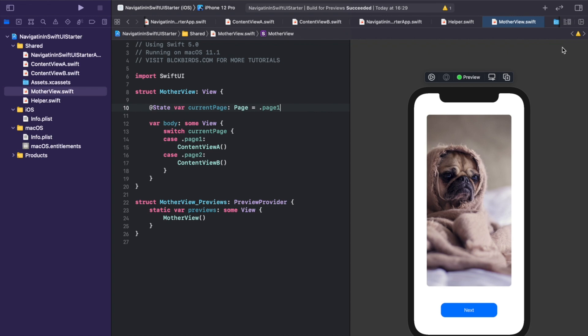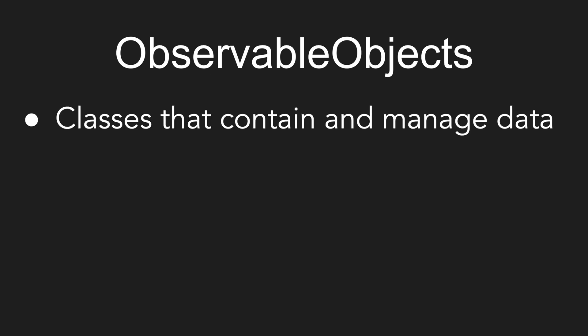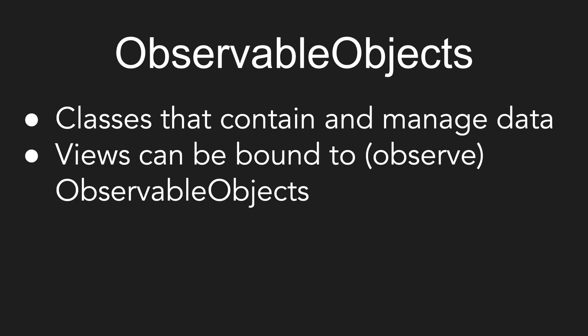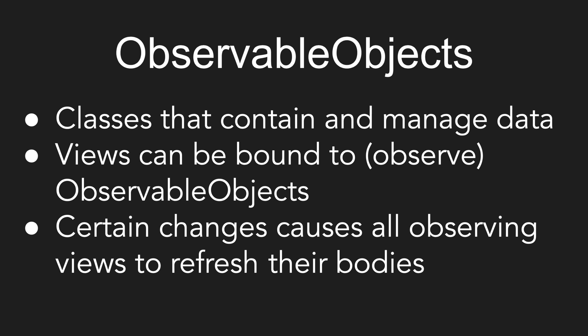At this point you are probably asking yourself: what are observable objects? Observable objects are similar to state properties. But instead of just refreshing the body of the related view when data changes, observable objects are capable of more. They are classes that can contain data, for example a string assigned to a variable. We can bind multiple views to the observable object — meaning we can make these views observe it. The observing views can access and manipulate the data inside. When a change happens to the observable object's data, all observing views get automatically notified and refresh, similar to when a state value changes.